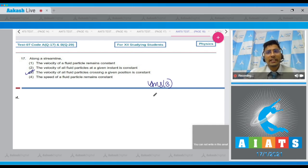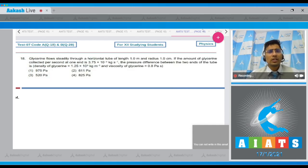Now let us move to question number 18. In this question the glycerin flows steadily through a horizontal tube of length 1 meter radius 1 cm. If the amount of glycerin collected per second at one end is 3.75 x 10^-3 kg per second the pressure difference between the two ends of the tube is.